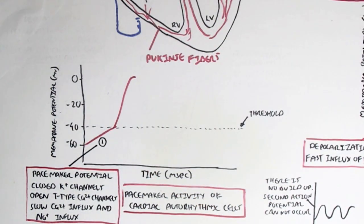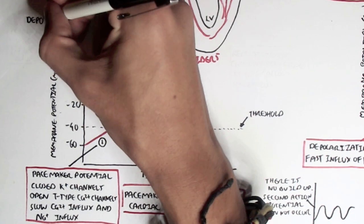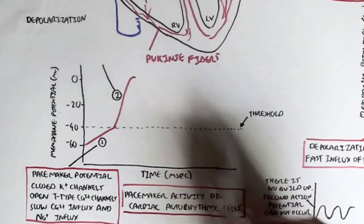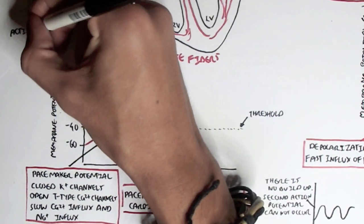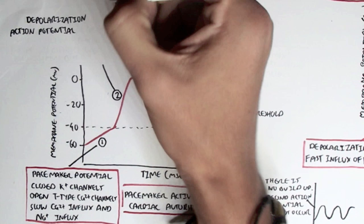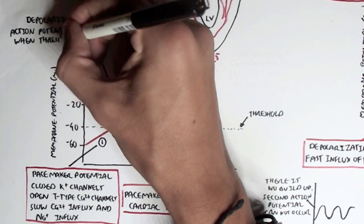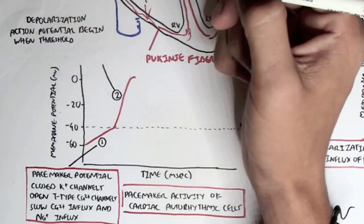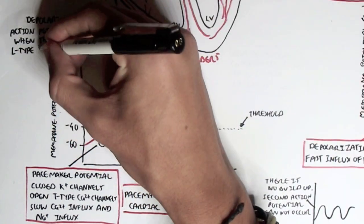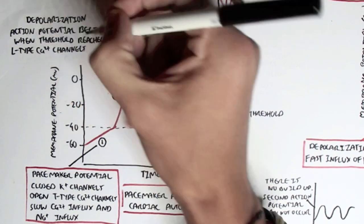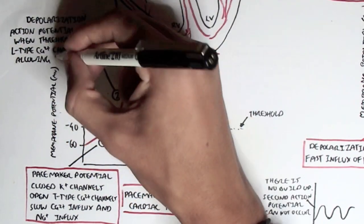Once the membrane potential reaches the threshold of negative 40 millivolts due to the pacemaker potential, it will shoot up to zero millivolts — this is depolarization, where an action potential begins. This is caused by the opening of L-type calcium channels, allowing more calcium to come in. This action potential generated by the pacemaker cells is then passed on to the cardiac muscle cells.